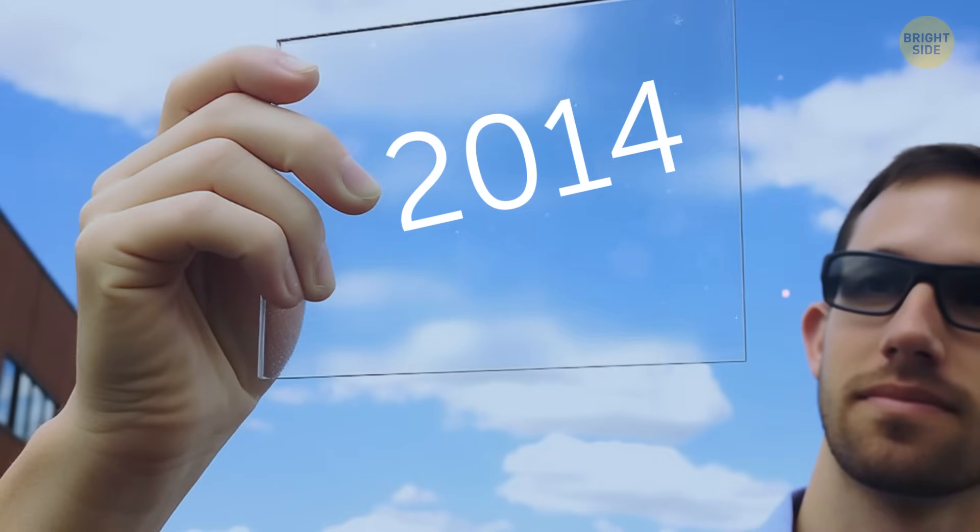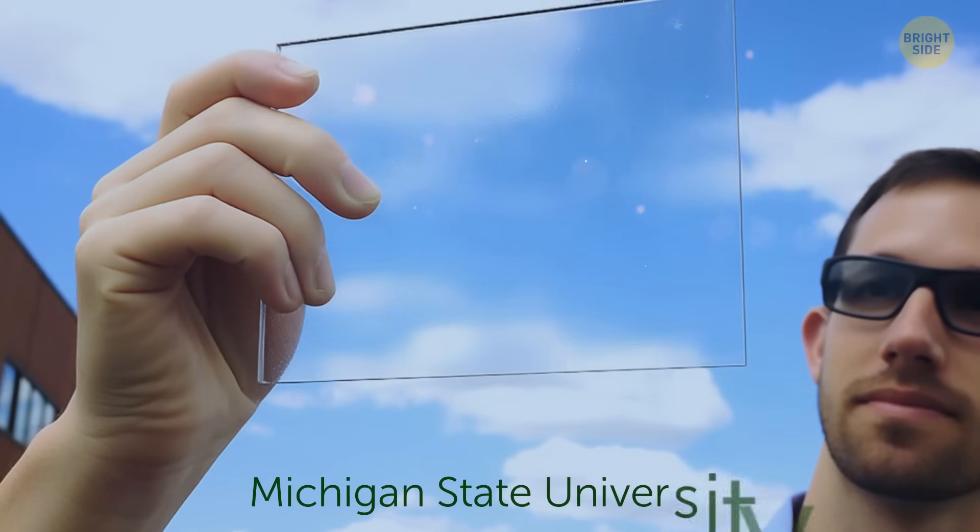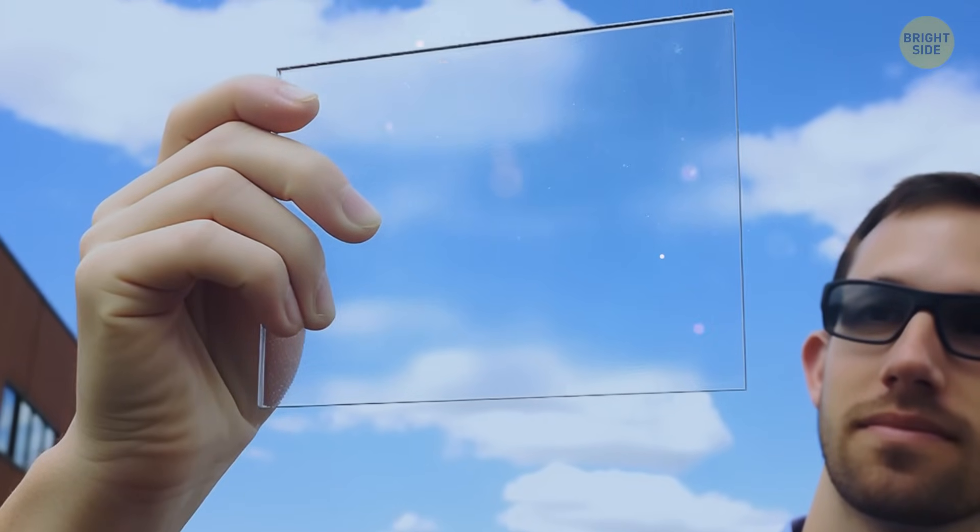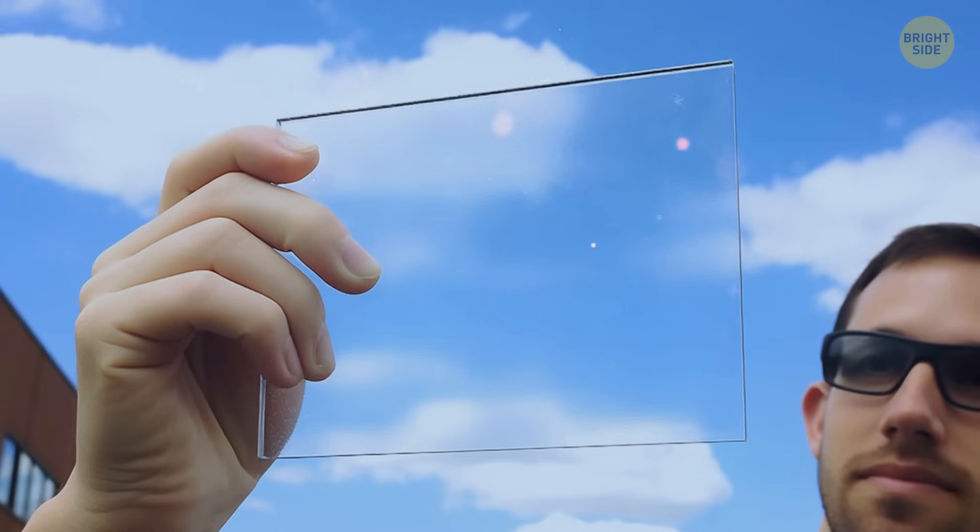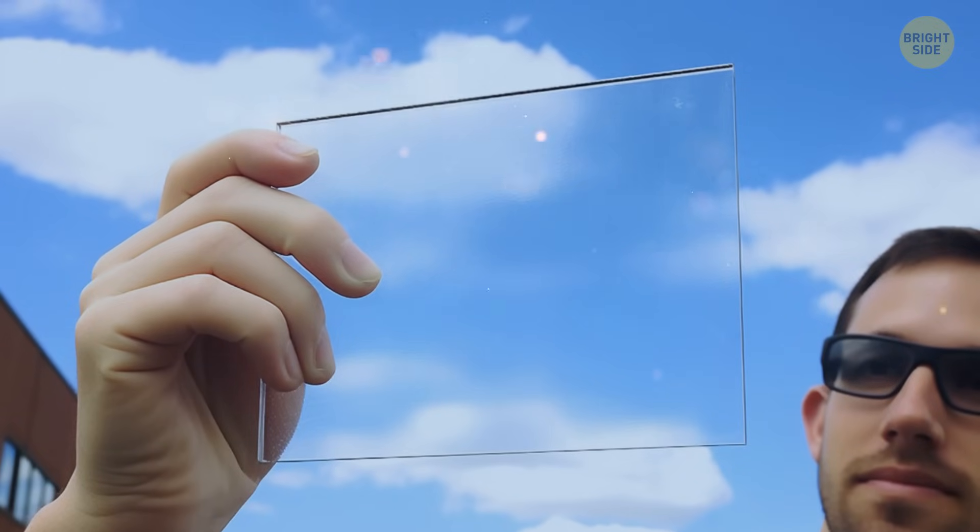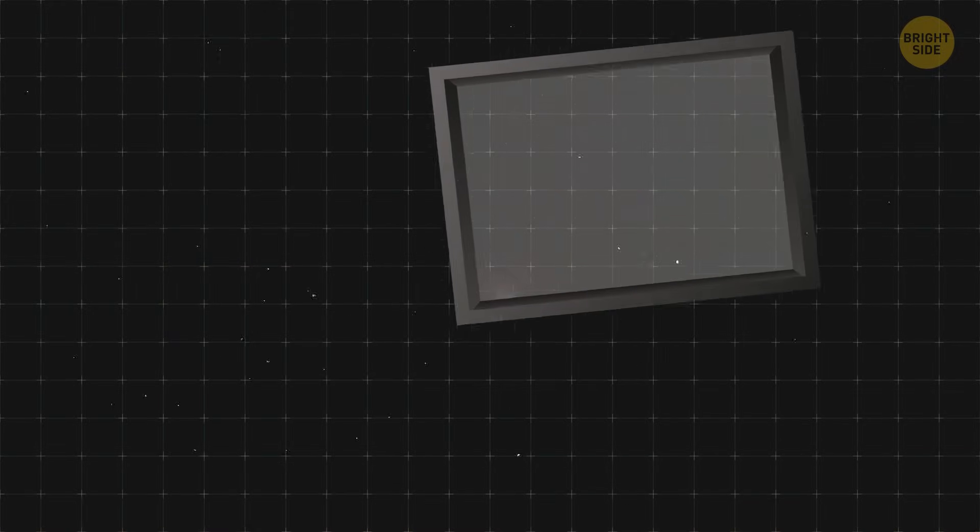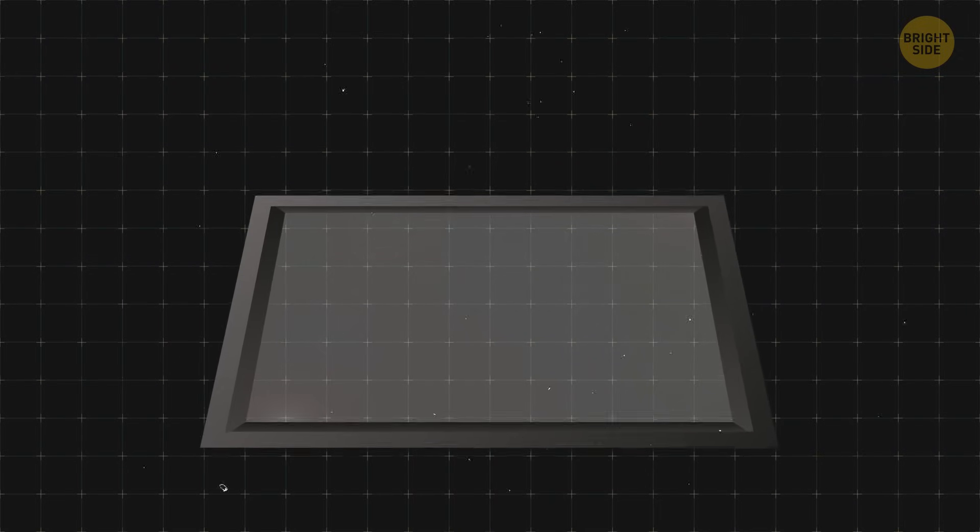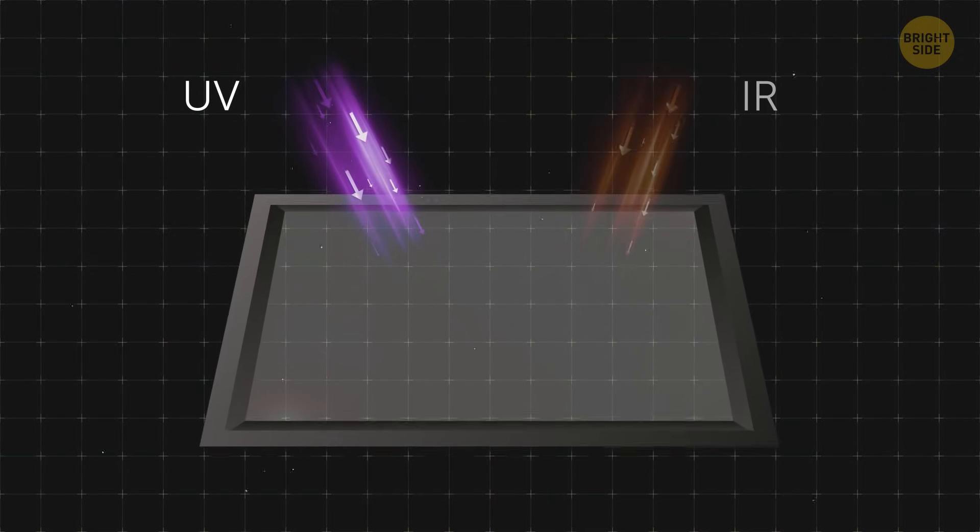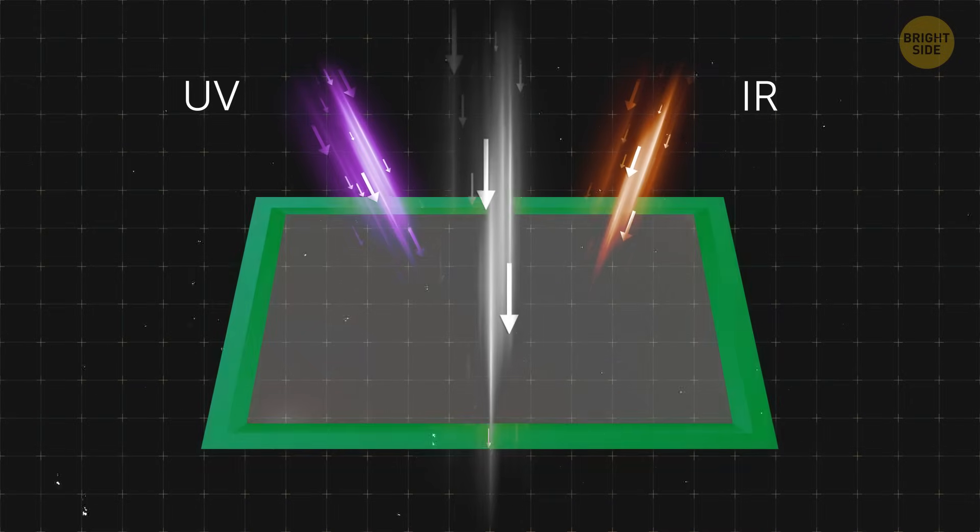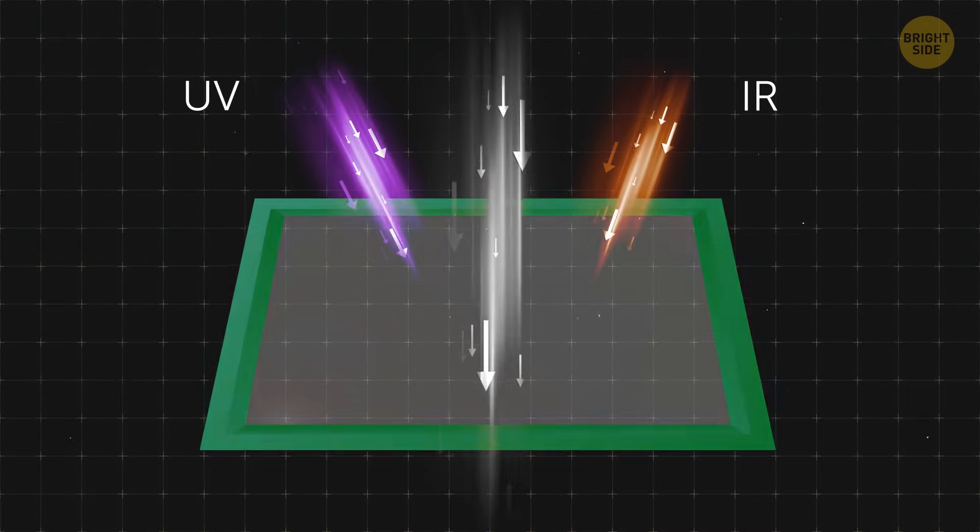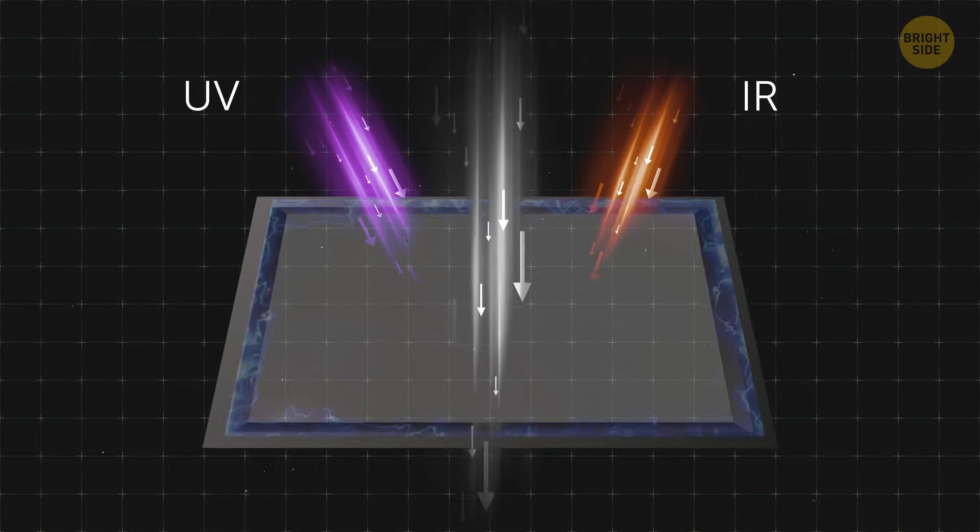However, in 2014, scientists from Michigan State University were able to come up with a solution to this contradiction and develop a fully transparent luminescent solar collector that can turn any glass sheet or window into a solar cell. These transparent solar concentrators are composed of clear organic salts. They capture the wavelengths of the solar spectrum that are not visible to the human eye, like the ultraviolet and infrared, while allowing the normal visible light to pass through. These captured wavelengths are then guided to the edges of the cell, where thin strips of conventional solar cells convert them into electricity.